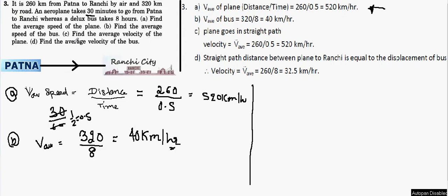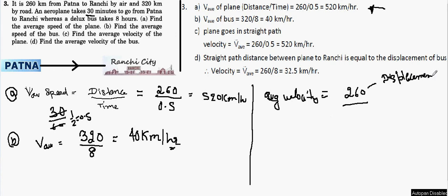Now the third part: find the average velocity of the plane. Talking about velocity for the flight, the distance and displacement are the same because the flight takes the shortest path. So the displacement is also 260 kilometers, and the time for the plane is 0.5 hours. Therefore, the average velocity of the plane = 520 kilometers per hour — the same as its average speed.